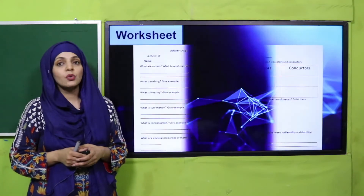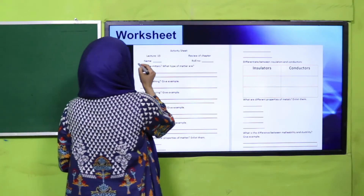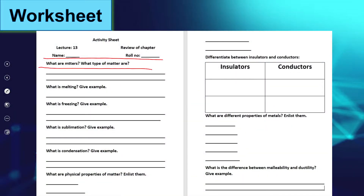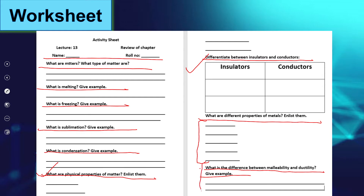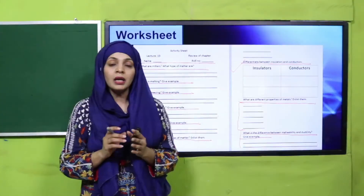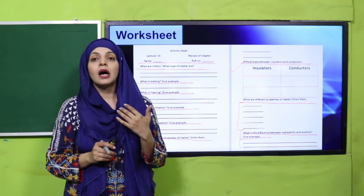Now it's time for practice. You can download this worksheet from the description box below this video, or you can get it in print form from your teacher. Write down your name and roll number, then answer: What are the different types of matter? What is melting — give an example. What is freezing — give an example. What is sublimation — give an example. What is condensation — give an example. List the physical properties of matter. Differentiate between insulator and conductor. List the properties of metals. What is the difference between malleability and ductility — give examples. Pause the video, complete this worksheet, and submit it to your teacher for grading.